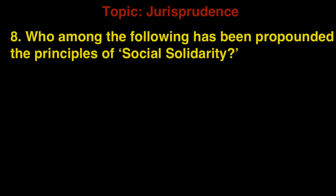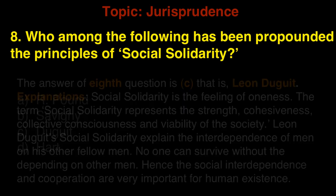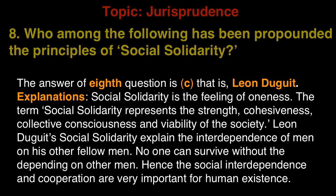Question 8: Who among the following has propounded the principles of social solidarity? A. R. Pound, B. Savigny, C. Duguit, D. Hart. The answer is C, that is Leon Duguit. Explanation: Social solidarity is the feeling of oneness. The term represents the strength, cohesiveness, collective consciousness, and viability of society. Leon Duguit's social solidarity explains the interdependence of men on fellow men. No one can survive without depending on others. Hence social interdependence and cooperation are very important for human existence.